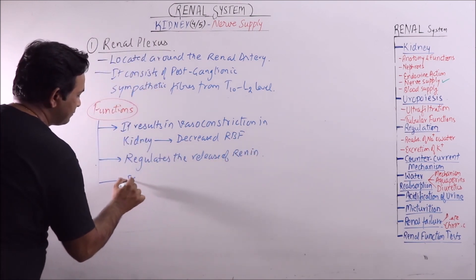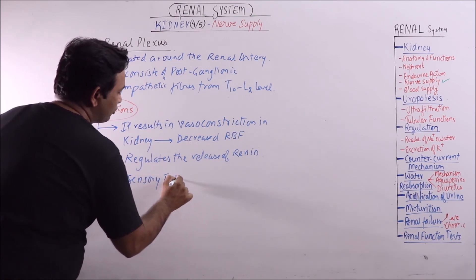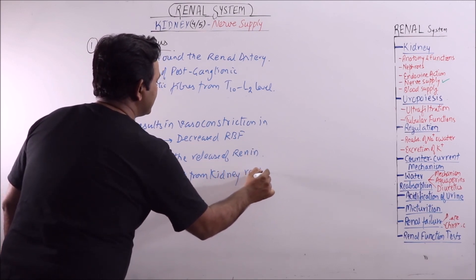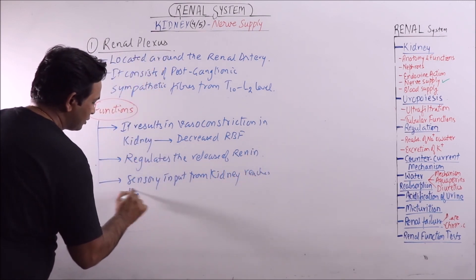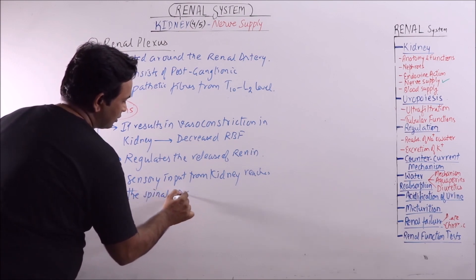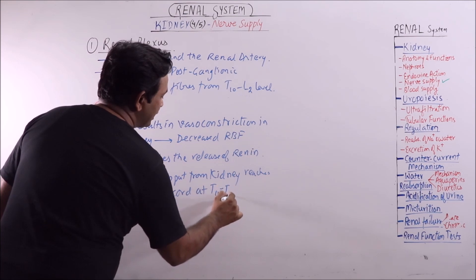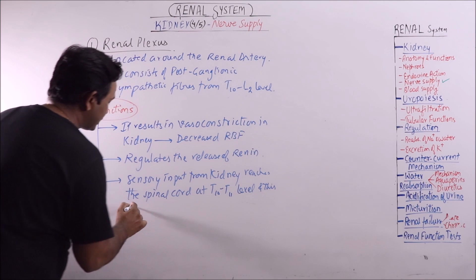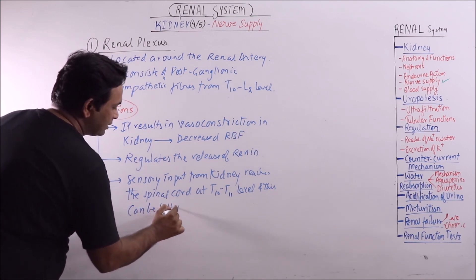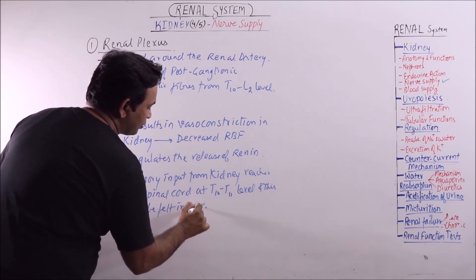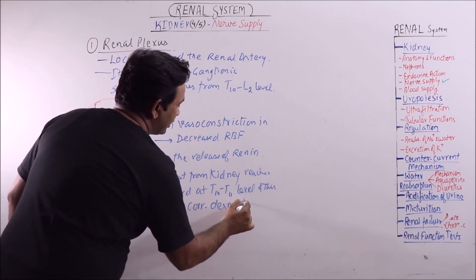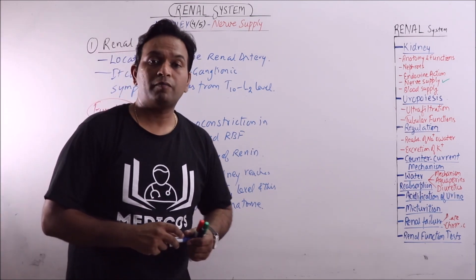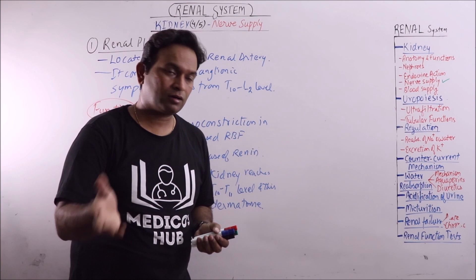Sensory input from the kidney reaches the spinal cord at the T10 to T11 level, and this can be found in the corresponding dermatome. So sometimes pain in the flank region may be referred pain from the corresponding kidney.